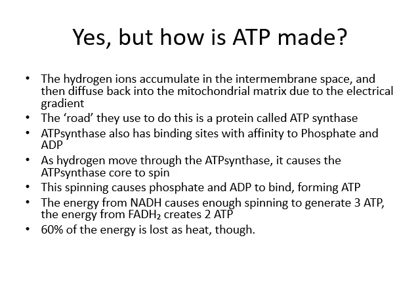There's only one way they can get back into the mitochondrial matrix, and that is through this protein called ATP synthase. ATP synthase has binding sites on itself, and what happens is phosphate binds to ATP synthase and ADP binds to ATP synthase. And as hydrogen moves through ATP synthase, the ATP synthase literally spins.